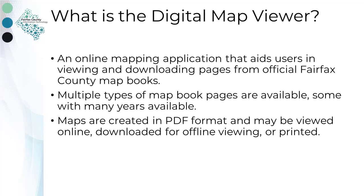The Digital Map Viewer was created to allow everyone, including the public, to have access to the official Fairfax County digital map books. With this tool you have access to many different types of maps, including property, zoning, stormwater, and much more. Use the tool to view the most up-to-date maps, even historical, or print or download for offline viewing.